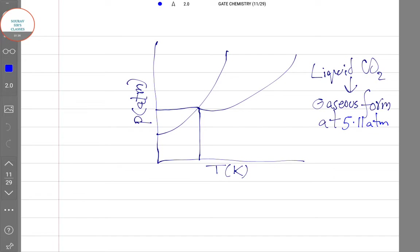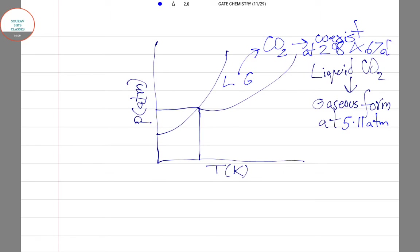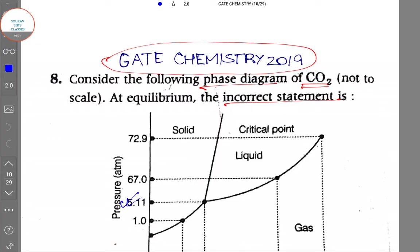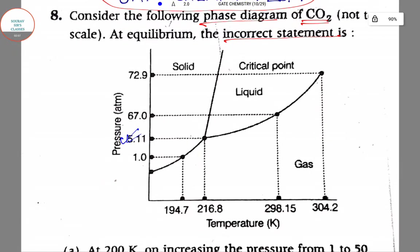Then, both the liquid and the gas phase of CO2 coexist at 298.15 K and 67 atm which can also be seen from our diagram, which is this region.